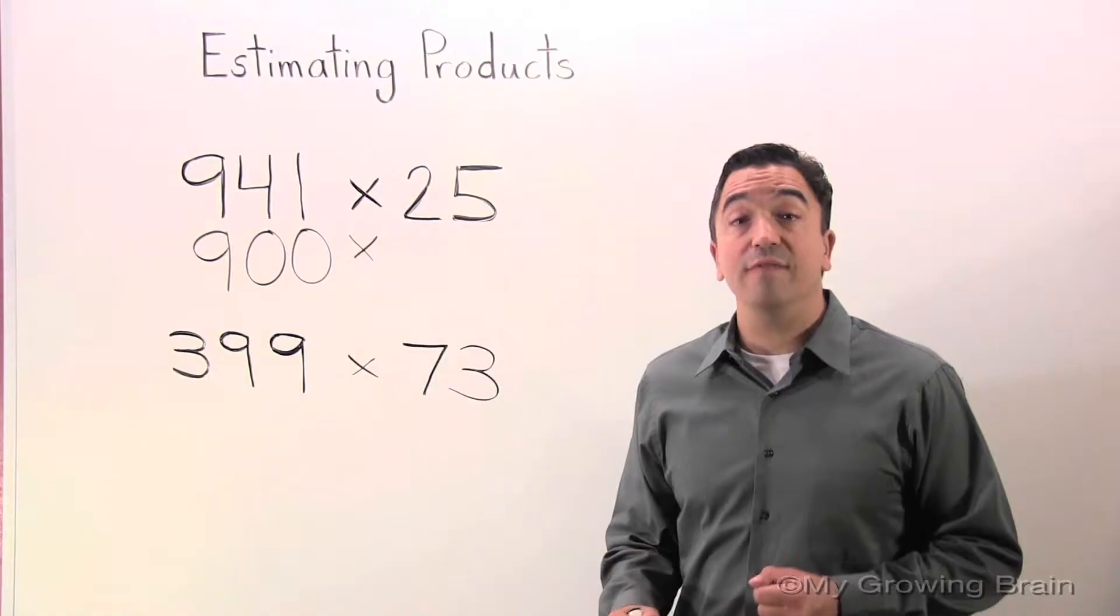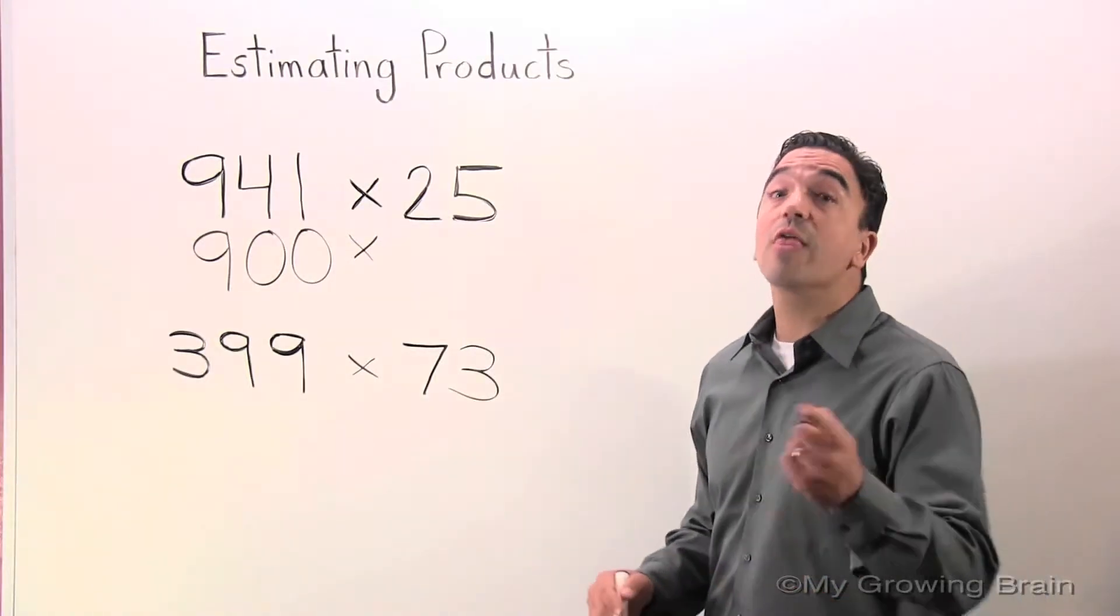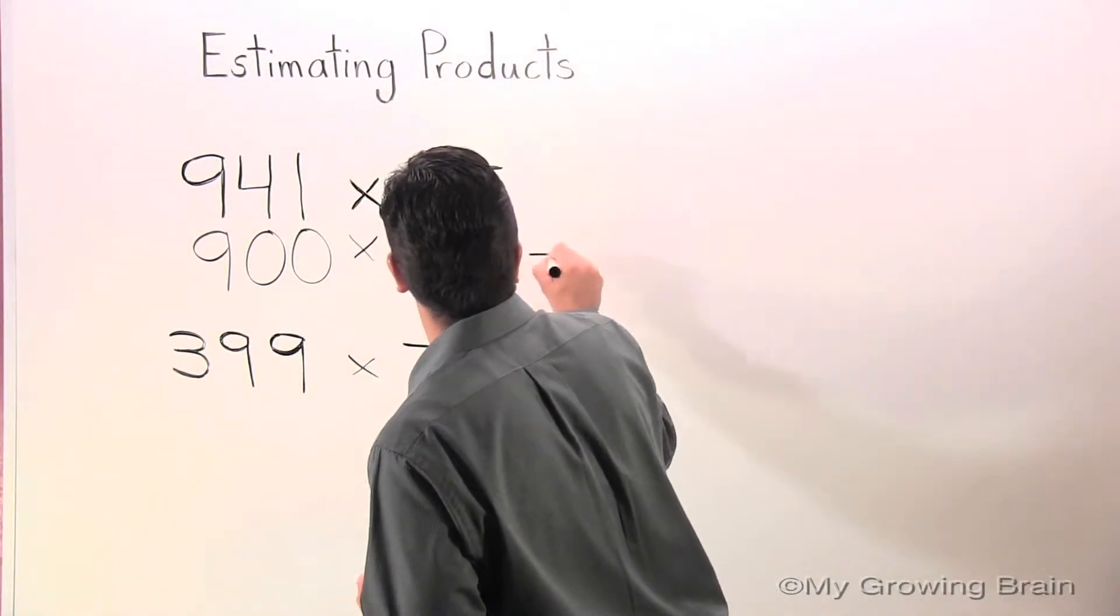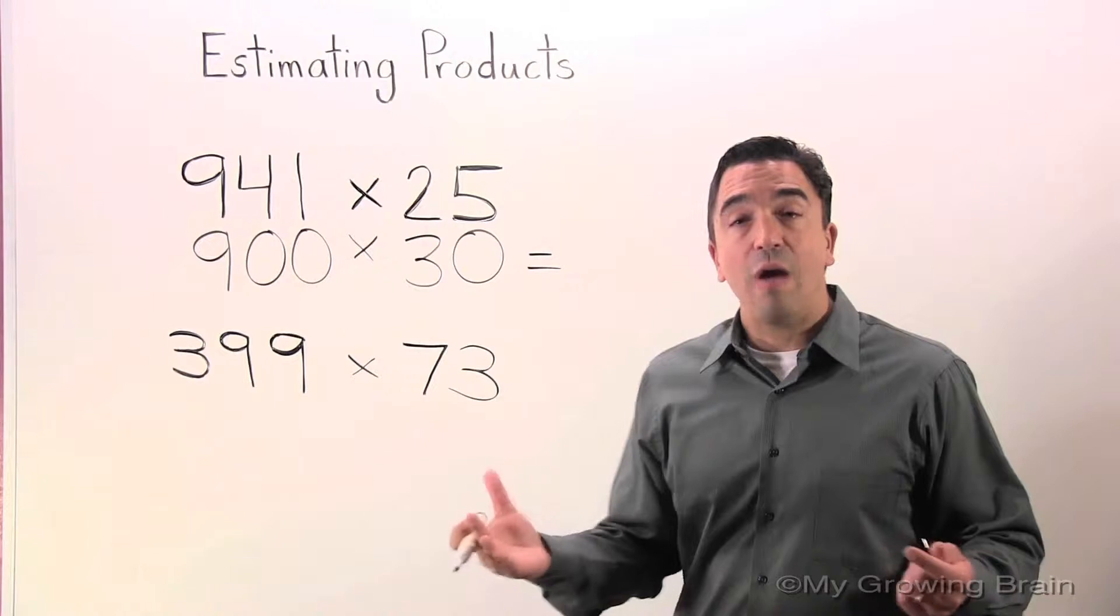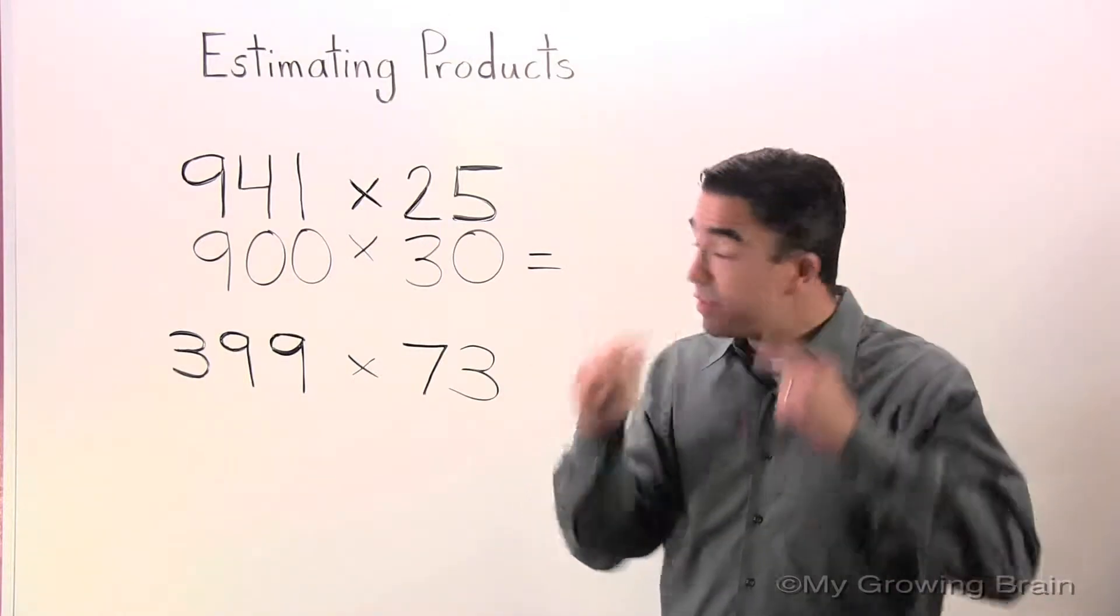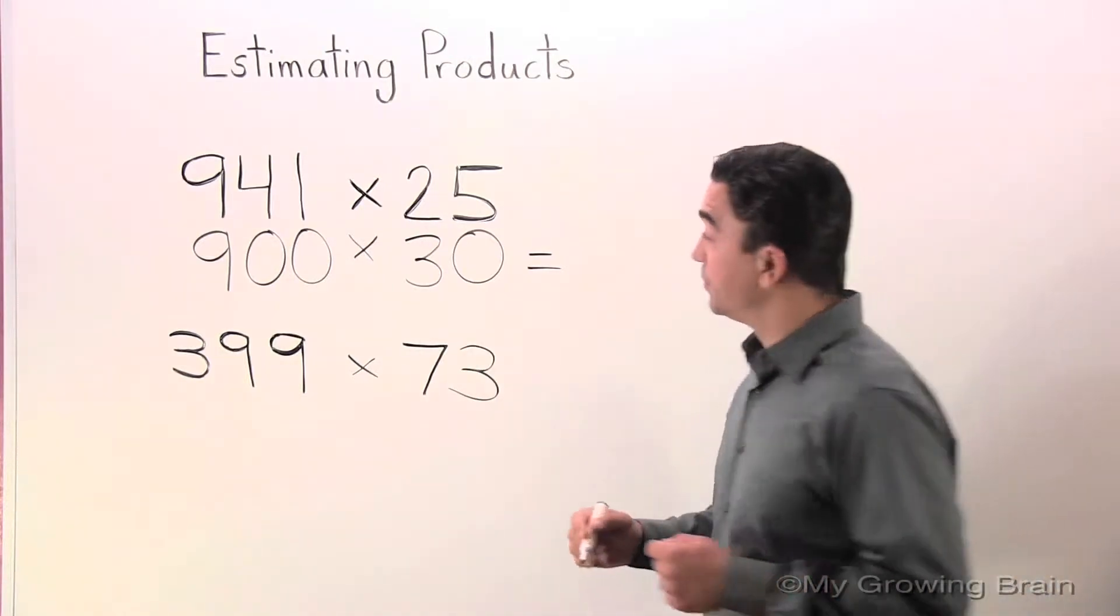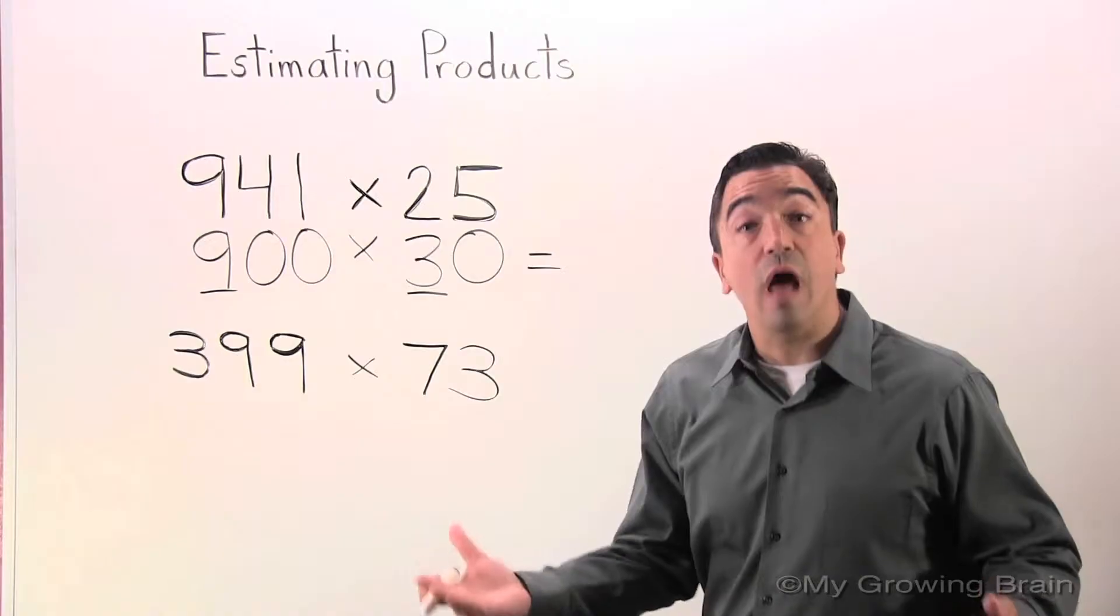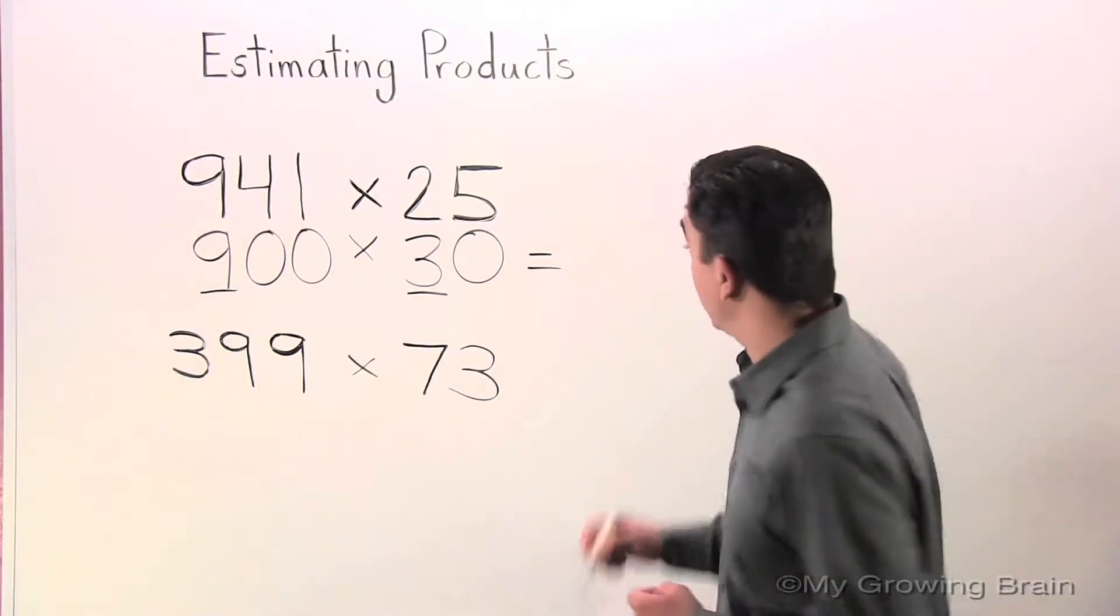I'm going to round 25 to the nearest ten, which is 30. Now, I'm going to use mental math to solve the problem.